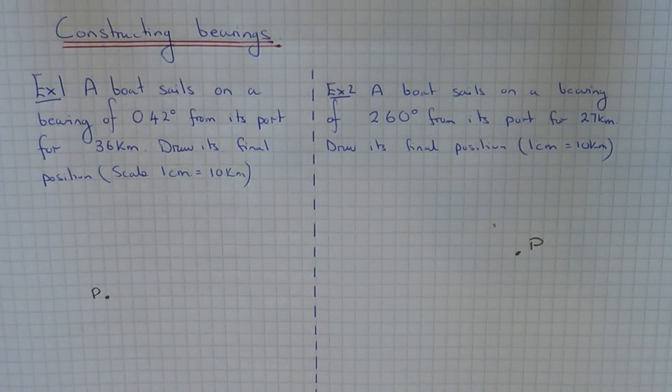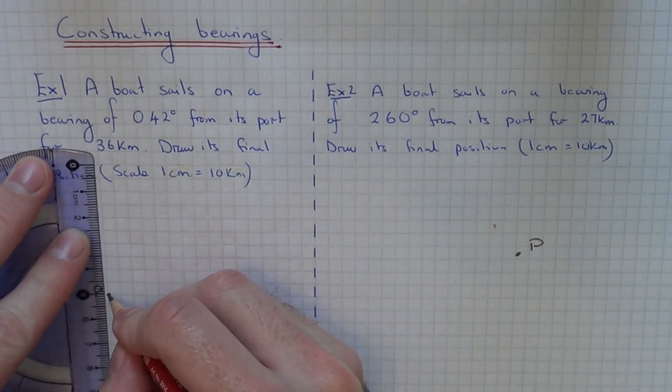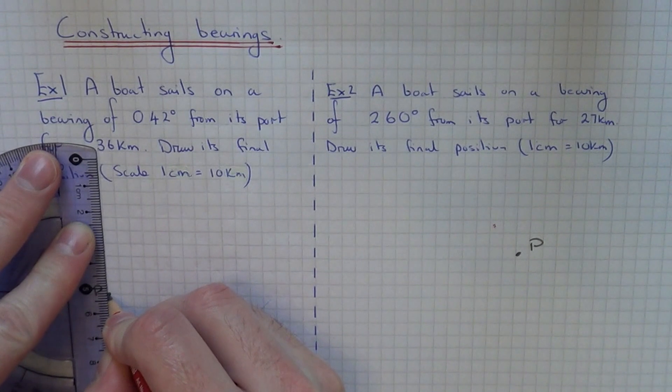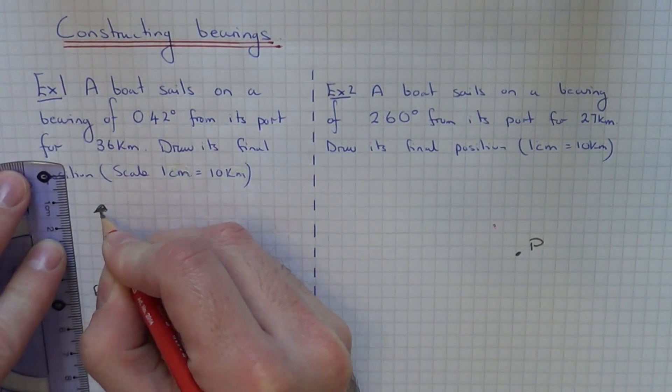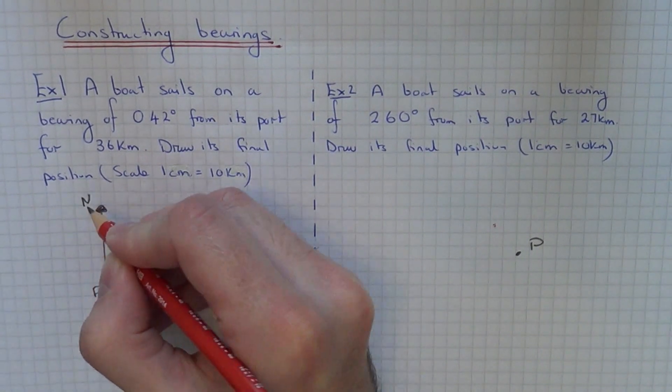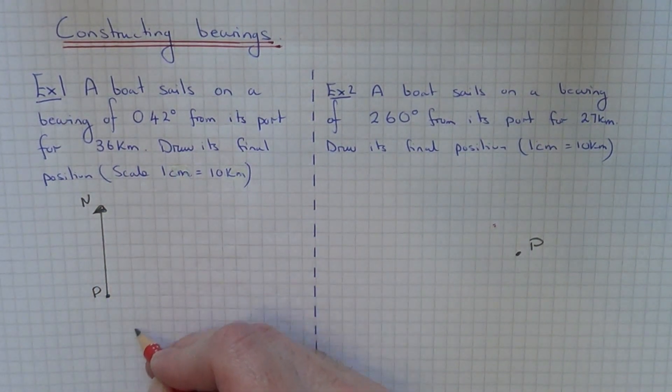The first thing you have to do here is to draw a north line from your port. This is because a bearing is measured in a clockwise direction from a north line.